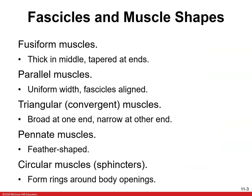Now, there are different kinds of muscles — different shapes. You have fusiform muscles, which are thick in the middle and tapered at the ends. You have parallel muscles, which are uniform width — the fascicles are aligned. You have triangular, which are convergent muscles — broad at one end and narrow at another. You have pennate muscles, which are feather-shaped. And then you have circular muscles, which are little sphincters. They form rings around body openings — around the eye, the mouth, and the anus.